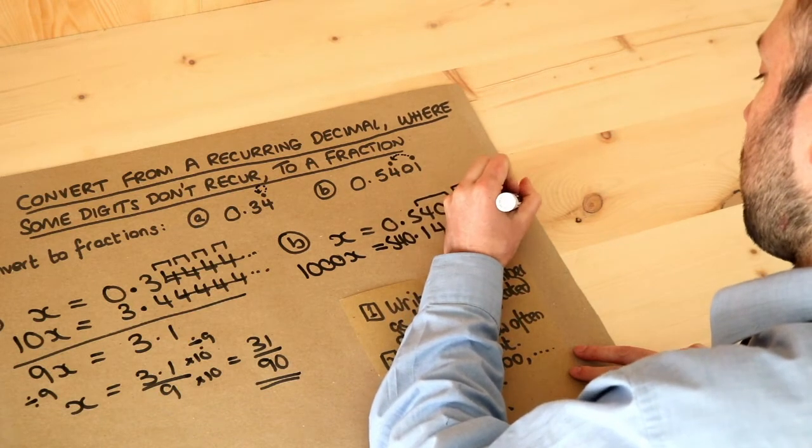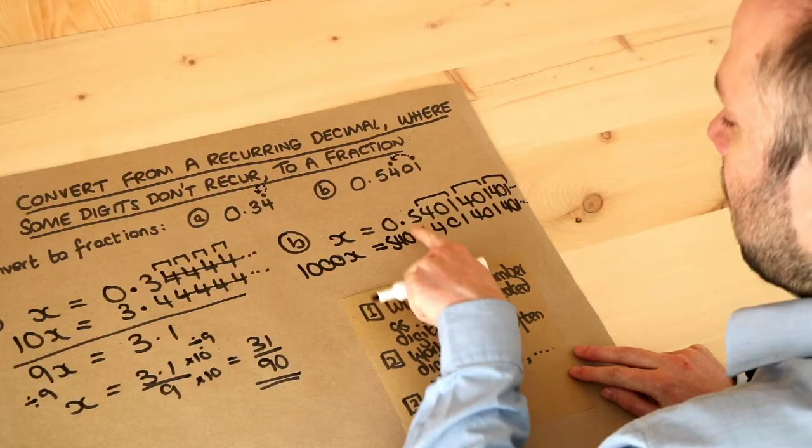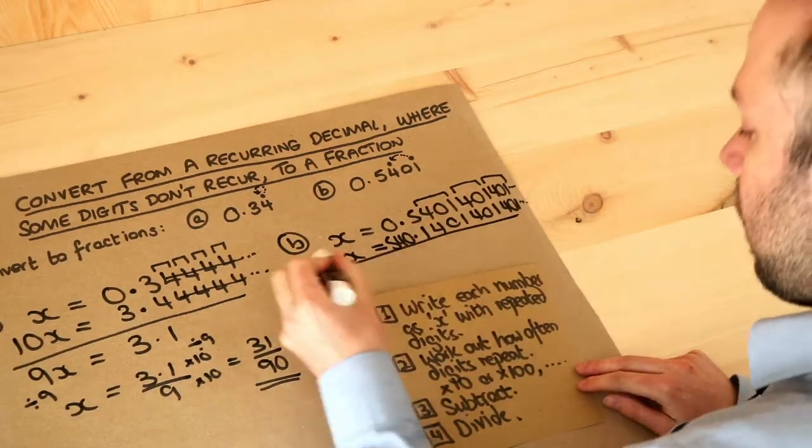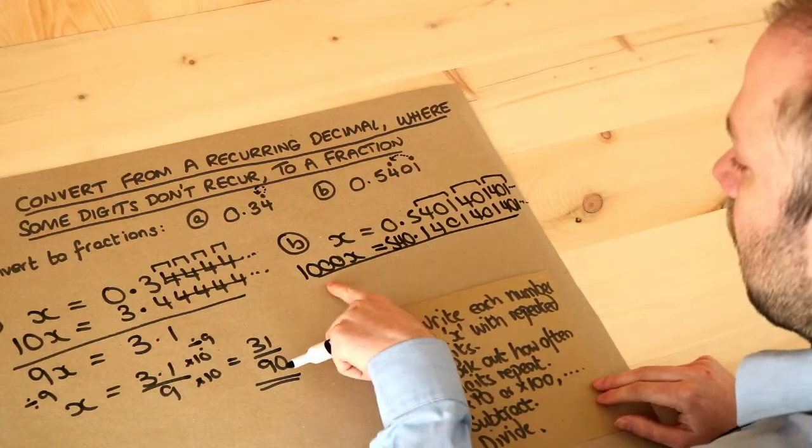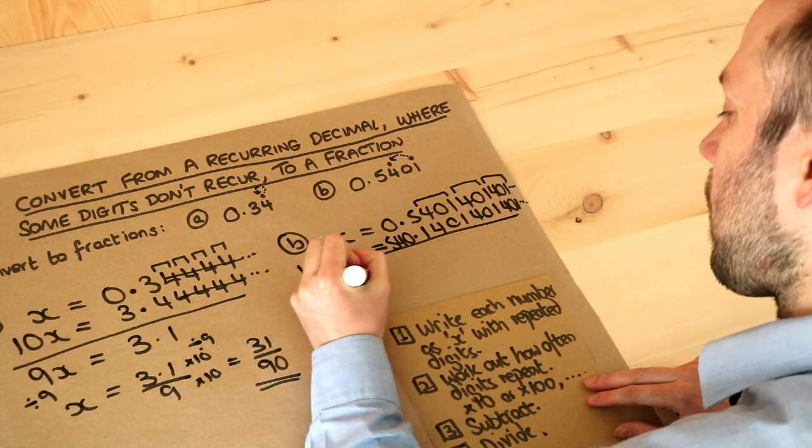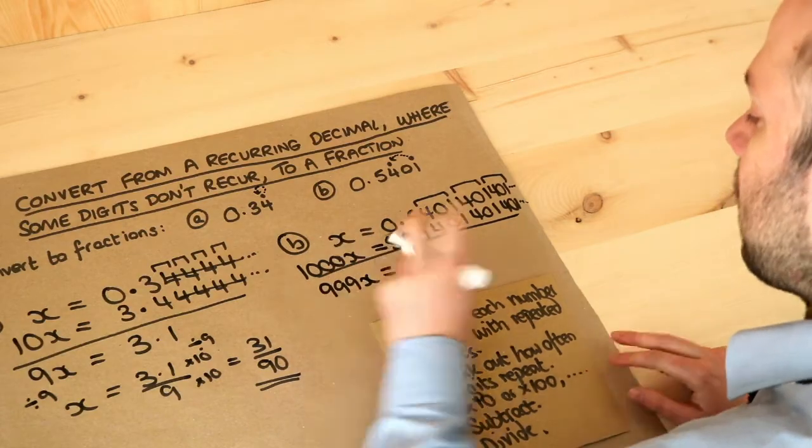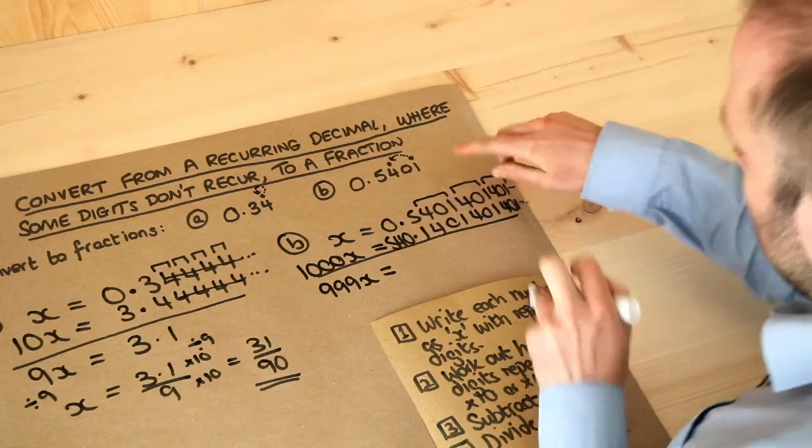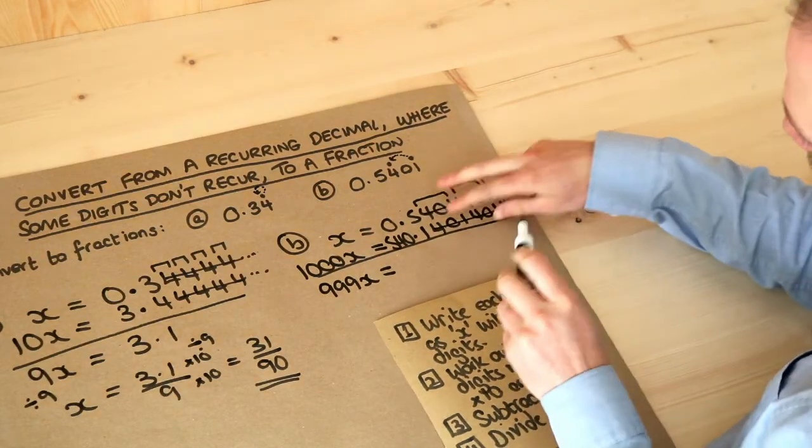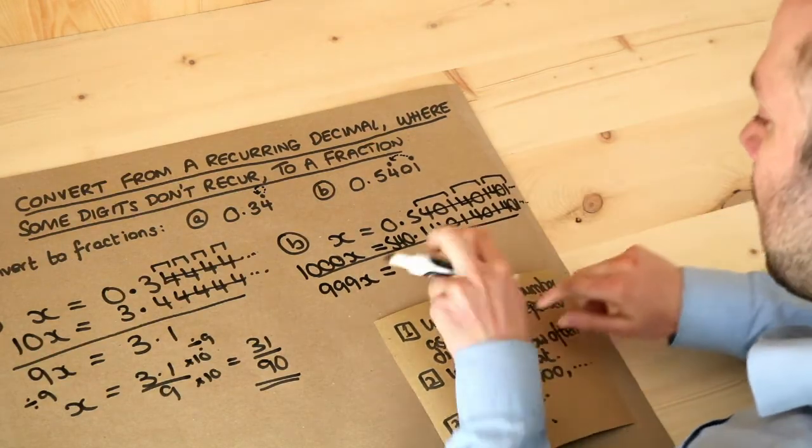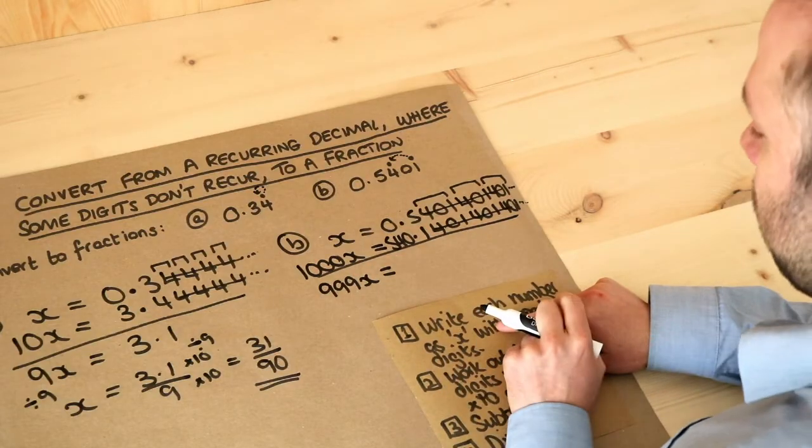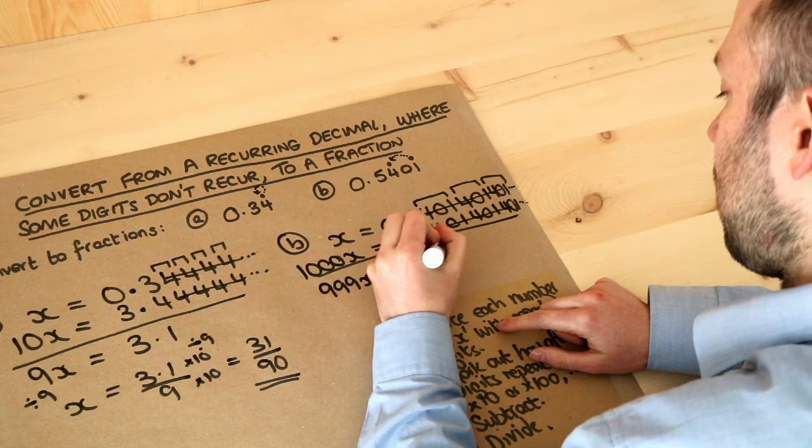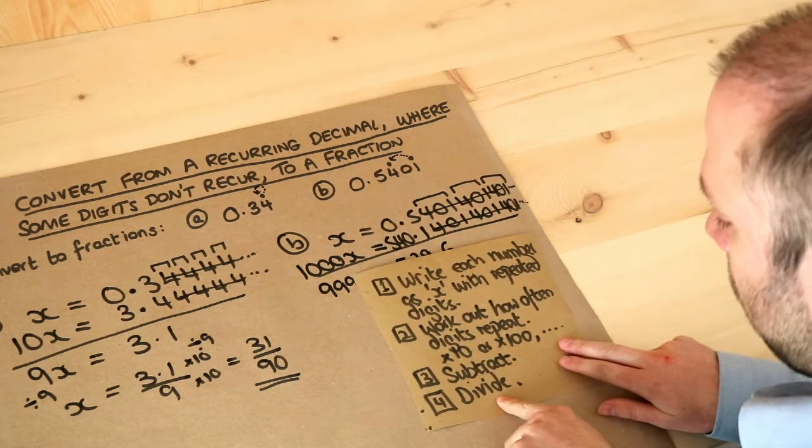And a couple things to note: remember these decimal points should line up and your digits here should line up as well. So last few steps, we subtract. A thousand x minus x is 999x. And then when we subtract these, look, notice 4 minus 4 that's going to be 0, 1 minus 1 that's 0. These line up so that's going to cancel because they're the same, leaving just 540.1 minus 0.5. That's 539.6.